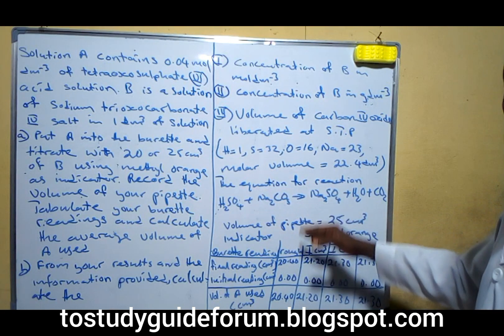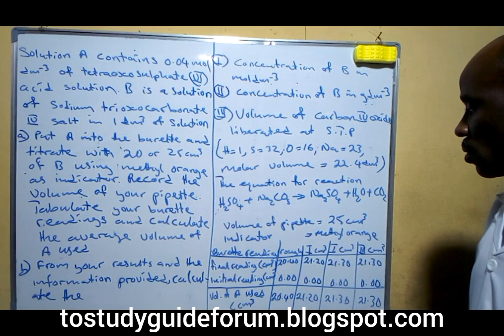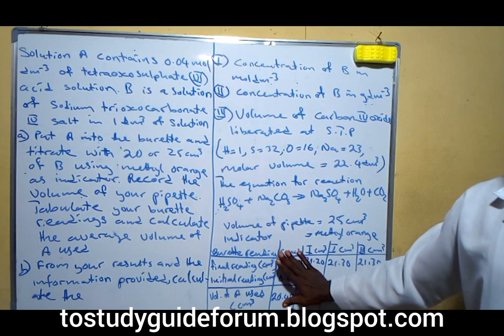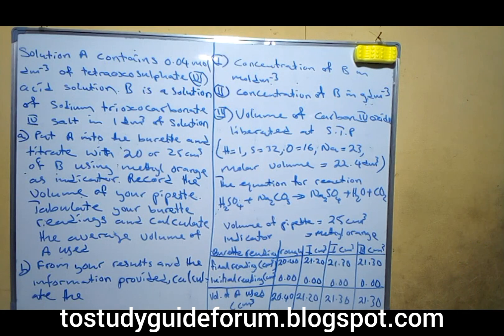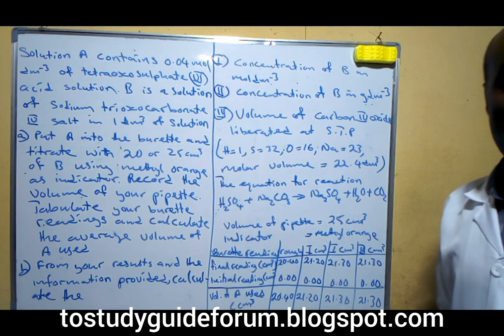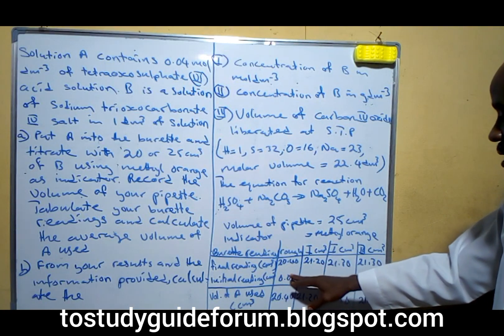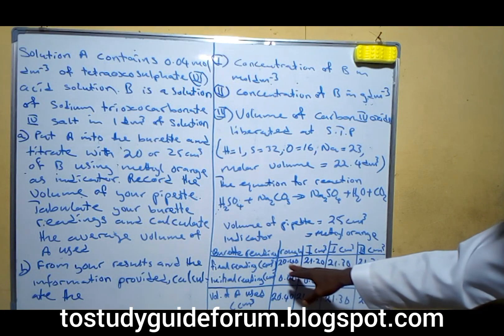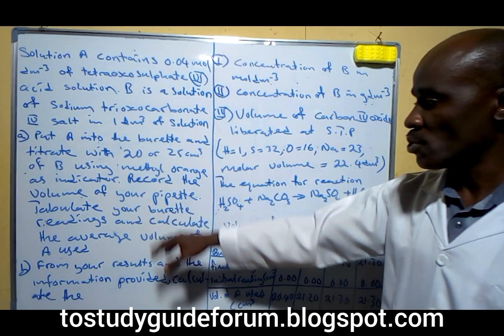The equation of reaction is also given to us, and this is the table, the tabulated experiment for the volumetric analysis on this question. If you look here, you'll find this is what we have in our tabular form. The first thing they say we should do here.